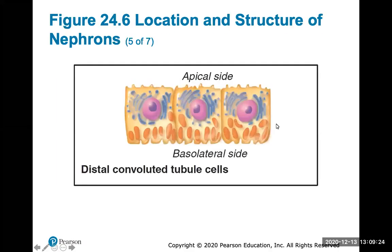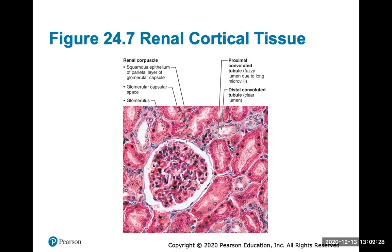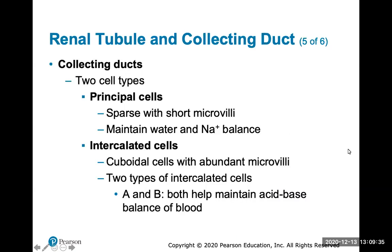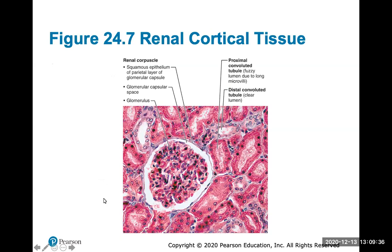Here's a look at the distal convoluted tubule histology and its cells. Here's the renal cortical tissue as seen under the microscope — you can see the glomerulus, the capsular space, and the proximal convoluted tubule.